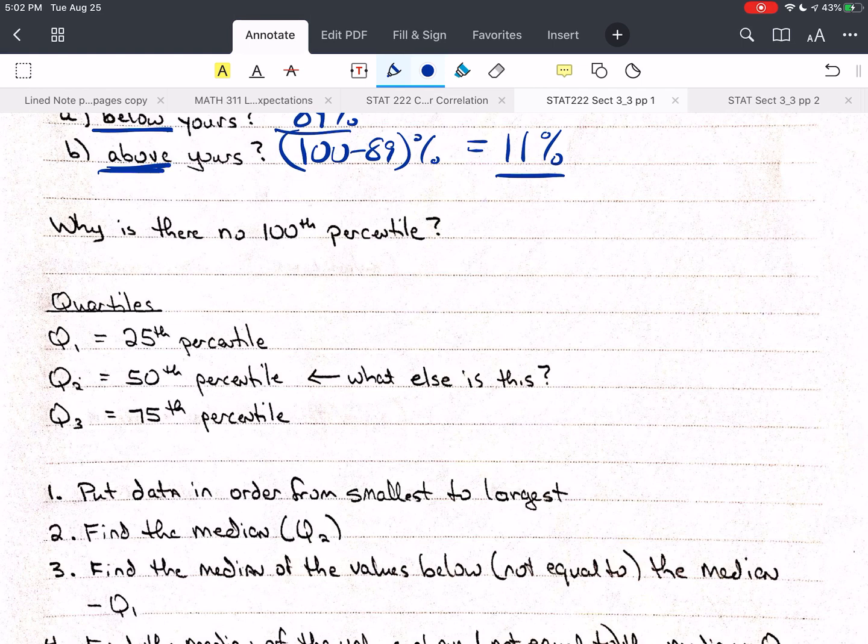Because any person who takes the test is part of 100%. So 100% can't be below that person's score because that person is part of the 100%.